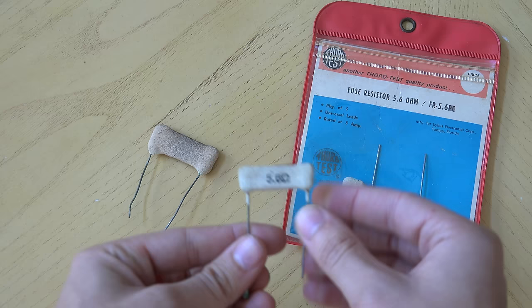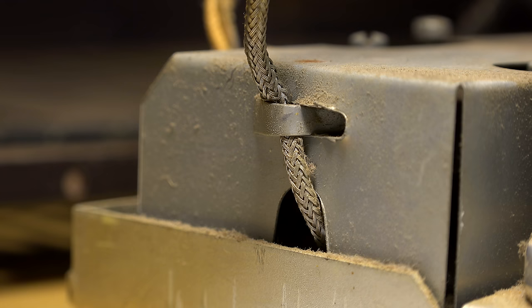Here you can see some corrosion building up in that fusible resistor. They used to call these things fusisters. They're basically a fuse mixed with a resistor, so the vacuum tubes have a slow and gradual power up when the TV is switched on.